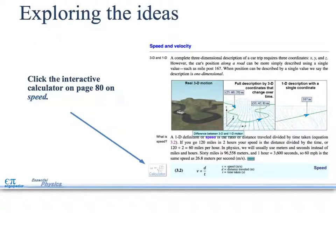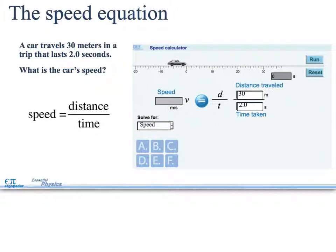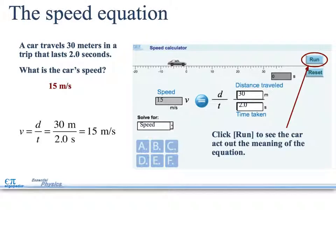Click on the interactive calculator on page 80, where it says speed. The car travels 30 meters in a trip that lasts two seconds. What is the car's speed? So you have distance divided by time. You can put this in as 30 divided by 2. Once you hit run, it tells you that it's traveling at 15 meters per second.